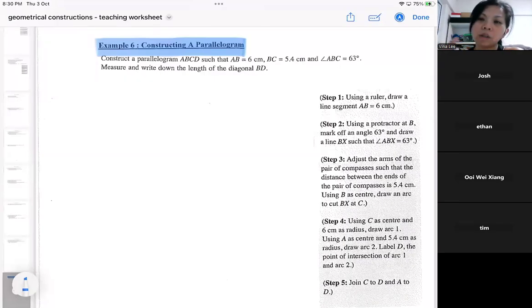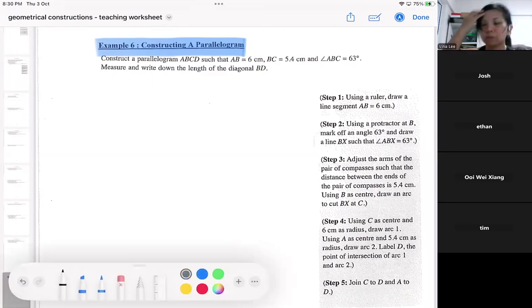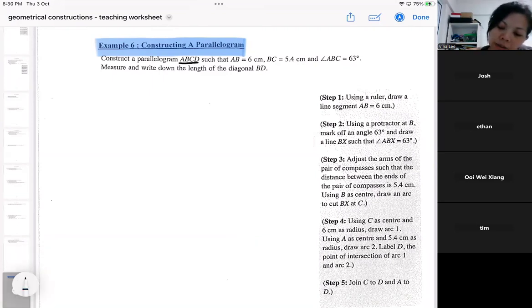For any question that you will need to construct, you will usually need a rough diagram first. So if you don't have a rough diagram, it's actually very difficult to construct because you don't even know what you're constructing. So in this question, they are saying ABCD, right? And that's a parallelogram.